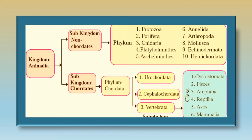Kingdom Animalia has two sub-kingdoms: non-chordates and chordates. The non-chordates are broken into 10 phylums: Protozoa, Porifera, Cnidaria, Platyhelminthes, Aschelminthes, Annelida, Arthropoda, Mollusca, Echinodermata, and Hemichordata. These 10 phylums make up the sub-kingdom non-chordates.